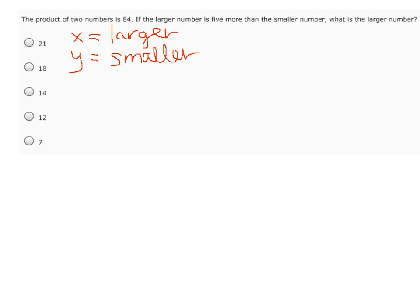To begin, it says the product of two numbers is 84. Our key word here is product, and product means to multiply. So we know that we'll be multiplying the two numbers, x times y. Remember, 'is' means equals. So x times y equals 84.